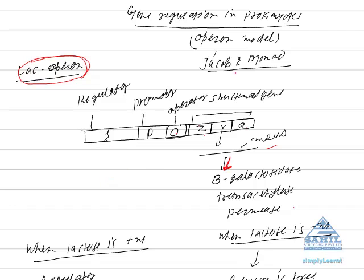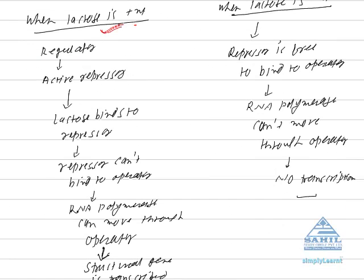Now let's see what happens in the presence and absence of lactose. When lactose is present, regulator always forms active repressor protein. Now repressor has two binding sites.